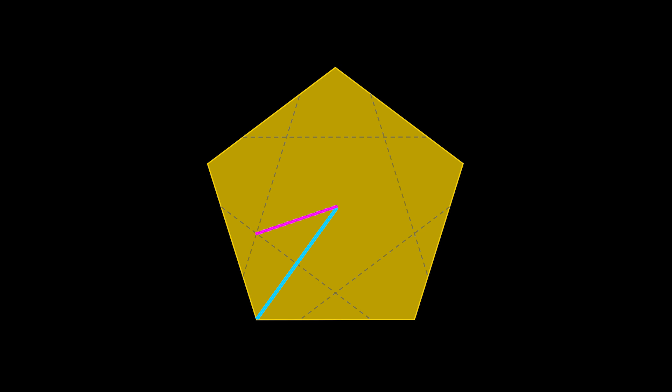Because when we fold a vertex to the center of this regular pentagon, we must create an isosceles triangle, because these two distances must be equal. And then we can work out that this angle in here is going to be 36 degrees because we've got 360 degrees in the center, one fifth will be 72 and then half again is 36.